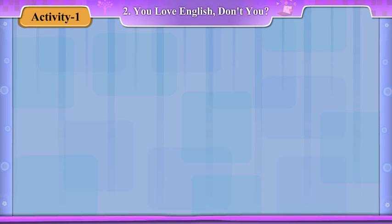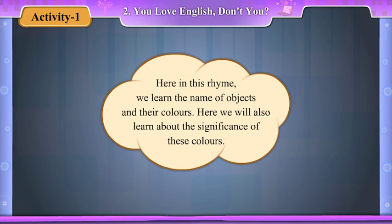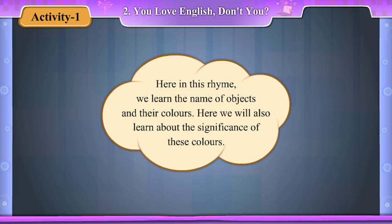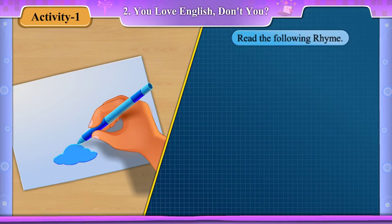Activity 1. Here, in this rhyme, we learn the name of objects and their colours. Here we will also learn about the significance of these colours. Read the following rhyme.